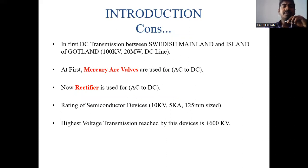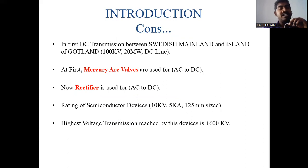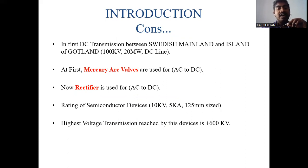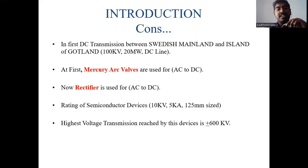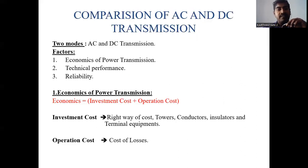The first DC transmission system was built between the Swedish mainland and the island of Gotland. Its capacity was 20 megawatts at 100 kV DC. Initially, mercury arc valves were used to convert AC to DC in the rectifier, but now semiconductor-based rectifiers are used instead. The rating of the semiconductor devices should be maintained at 10 kV, 5 kilo-amps, and 125 mm in size, with the highest voltage reaching up to 600 kV.